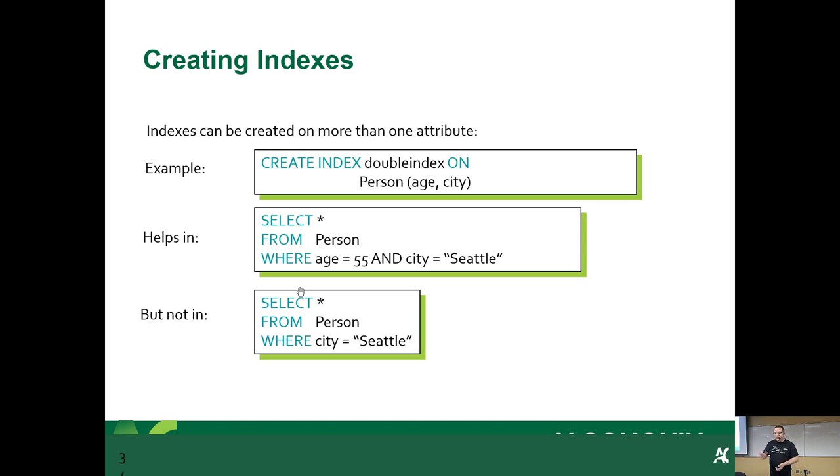So here's the double index one. So you create an index. They decided to call it double index as the example, because we're indexing two columns and we're going to index the table called person and age and city are the two columns we're going to index. So it will help if you do a query like select star from person where age is 55 and city is equal to Seattle. However, it will not help if you don't have the age in it because the index is where the query optimizer reads the query.